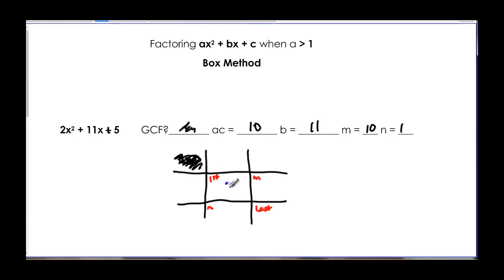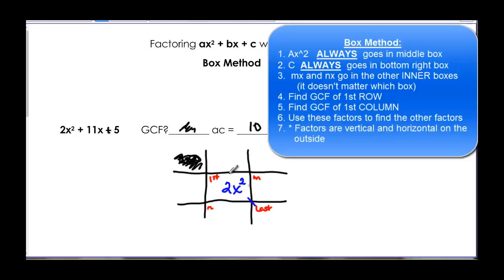My first term is 2x squared. It always gets that middle box. Diagonally down from that one is our 5, which is our last term. The M and N that we found go in here. It doesn't matter which one goes where. I'm going to put 10x and 1x, but you might put them the other way. They just have to be diagonal from each other.